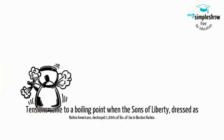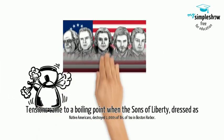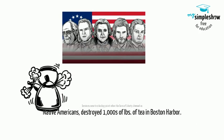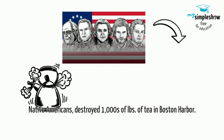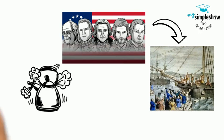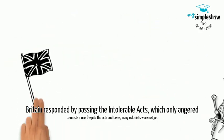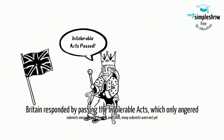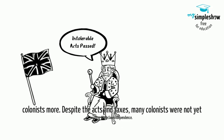Tensions came to a boiling point when the Sons of Liberty, dressed as Native Americans, destroyed thousands of pounds of tea in Boston Harbor. Britain responded to the Boston Tea Party by passing the Intolerable Acts, which only angered colonists more.